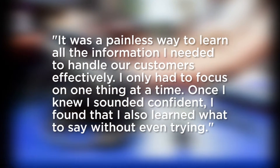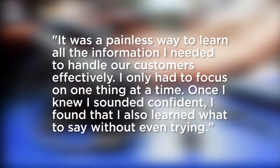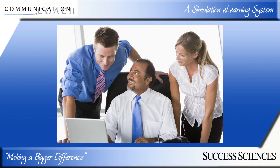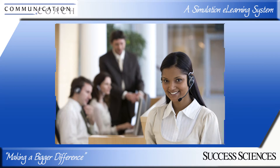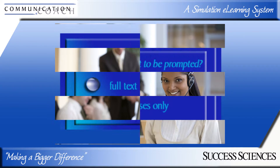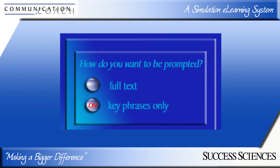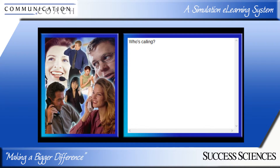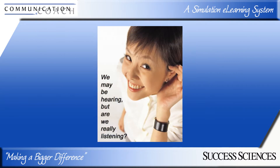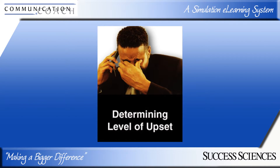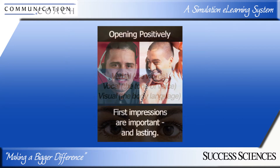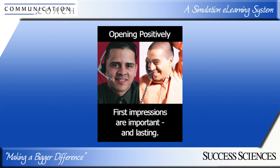I only had to focus on one thing at a time. Once I knew I sounded confident, I found that I also learned what to say without even trying. When you have successfully completed working with full text support, you will have built a basic familiarity with what to say and mastered how to say it. Now with key phrase support, your focus will be on how to put the information into your own words while maintaining the same level of accuracy, professionalism, and excellence. Overview windows appear next to your full text or key phrases box. They can show a screenshot of where you are in your system at that point of the conversation, as well as other useful tips and reminders.